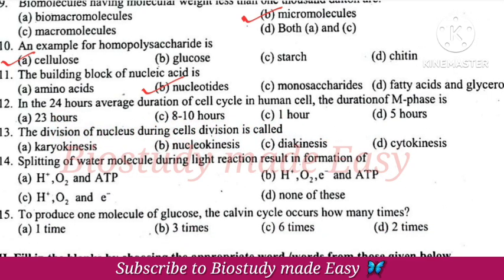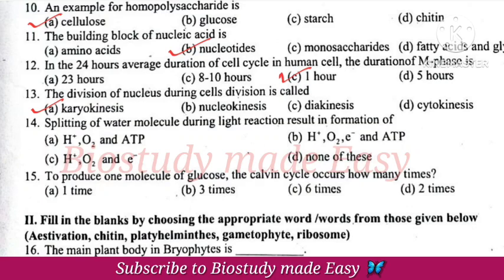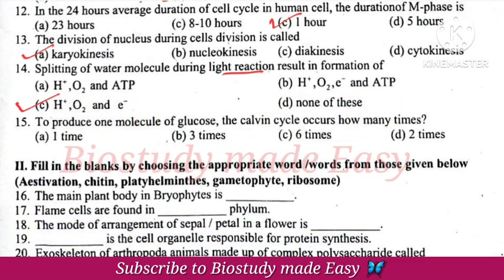24-hour cell cycle. M-phase is just one hour. Division of nucleus during cell division is called karyokinesis. Splitting of water molecules in light reaction produces hydrogen ions, oxygen, and electrons. To produce one molecule of glucose, the Calvin cycle is used.